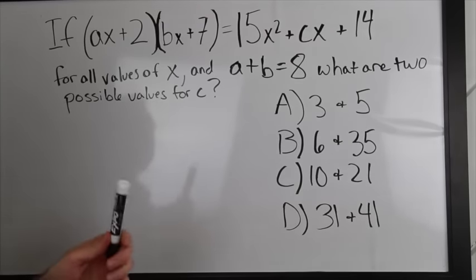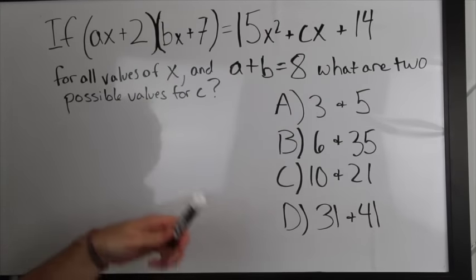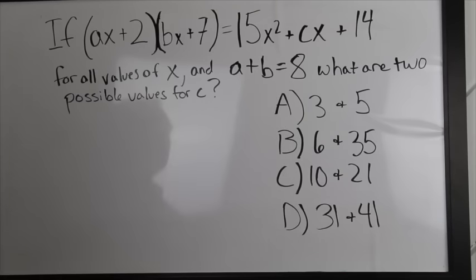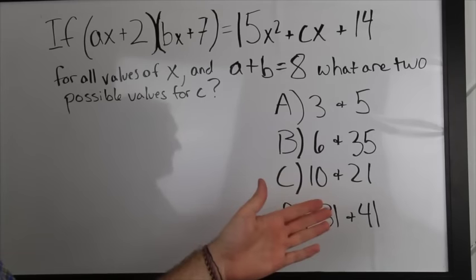Alright, so when we first look at this problem it looks very complicated. We have this long thing up here, lots of variables, and even more information down here. Also, each of our answer choices has two different numbers, so it looks complicated.